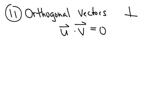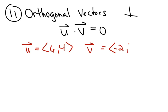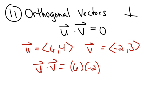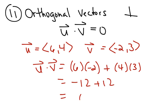Two vectors are said to be orthogonal or perpendicular if their dot product is equal to 0. If vector u is (6, 4) and vector v is (negative 2, 3), find the dot product: 6 times negative 2 plus 4 times 3 equals negative 12 plus 12, which is 0. So yes, they are orthogonal.